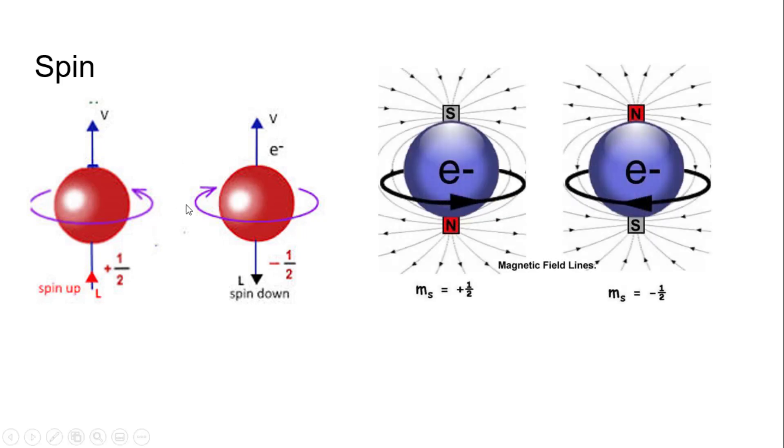And when electrons spin, they generate little magnetic fields. This is why one went up towards the north, one went up towards the south, because they have these little magnetic fields.